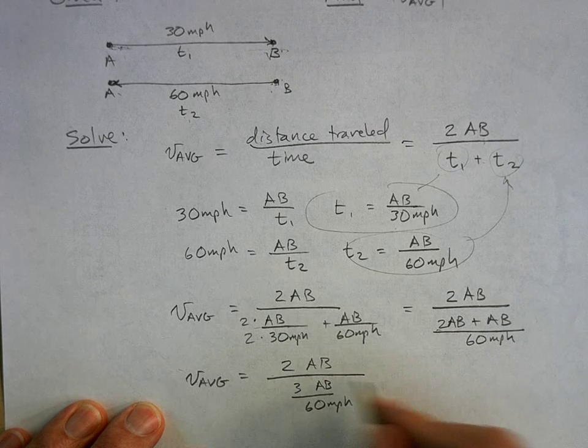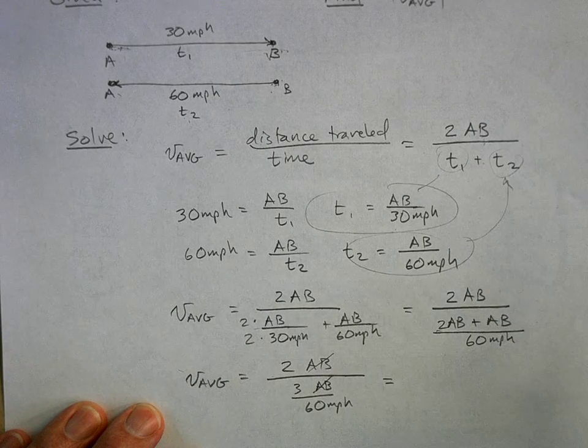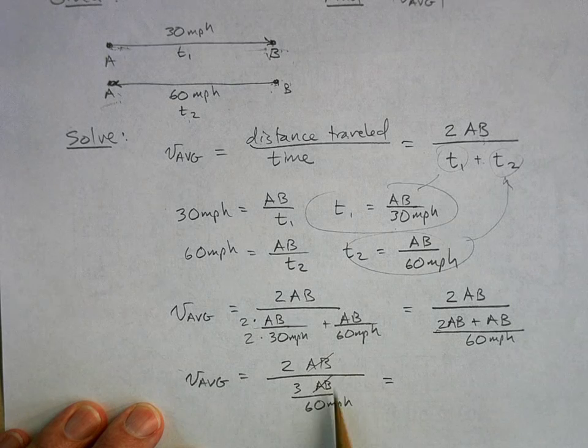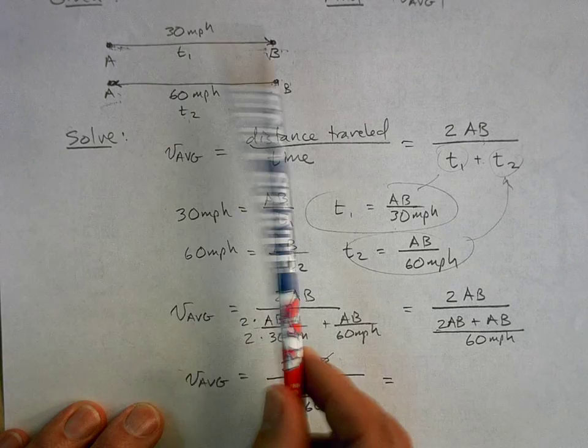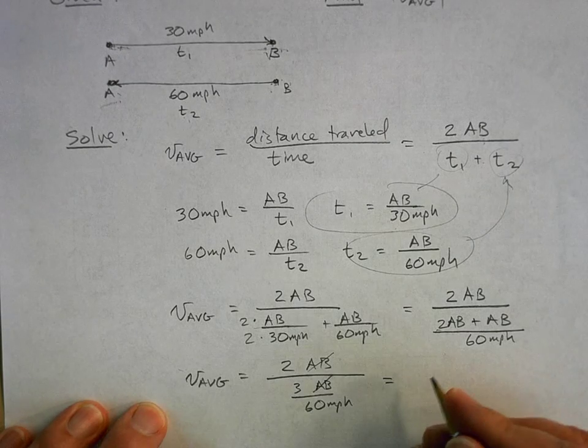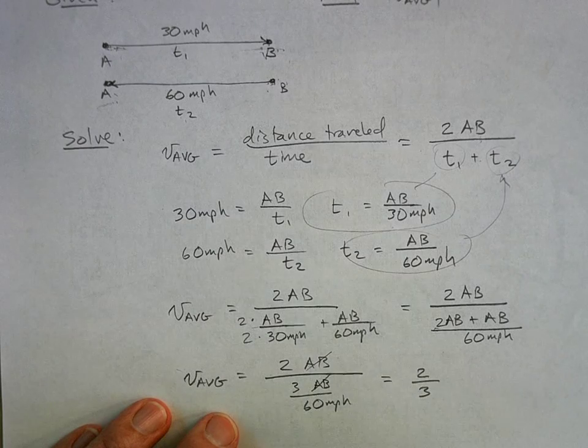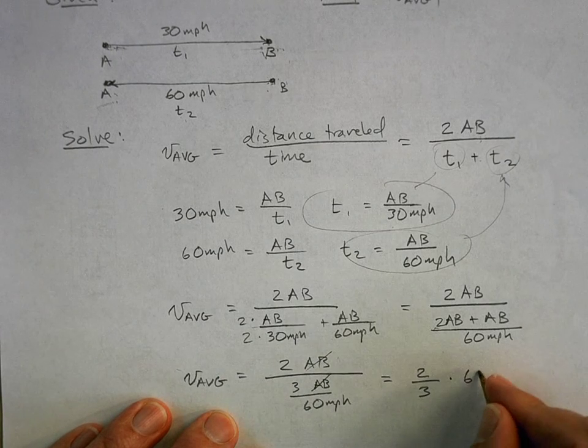So the AB is going to cancel, and this will happen in a problem like this. If you had picked a distance from here to here, that distance would have just cancelled out. It doesn't matter what distance you pick from A to B, you're going to get the same answer. So this is going to be 2/3, and then you reciprocate and multiply, so that's times 60 miles per hour.